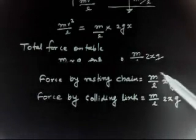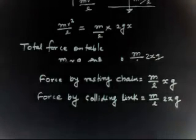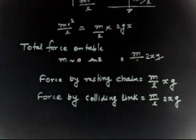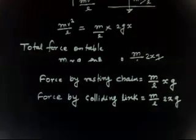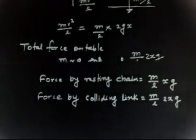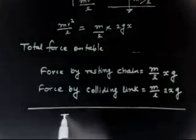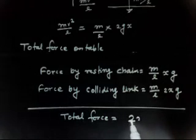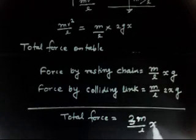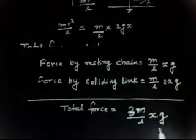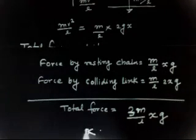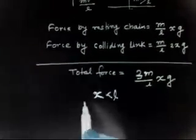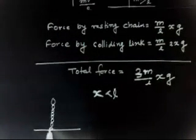The colliding chain applies 2 times the force that the resting chain already applies on the table — this is a very important result. So the total force is MgX/L + 2MgX/L = 3MgX/L. This is valid only if X is less than L, meaning the chain is still in the process of falling.